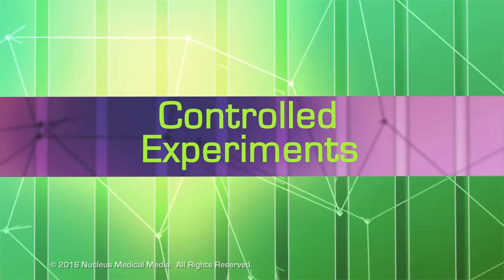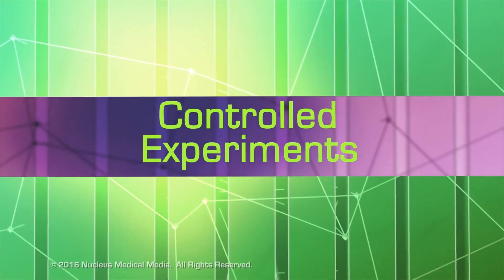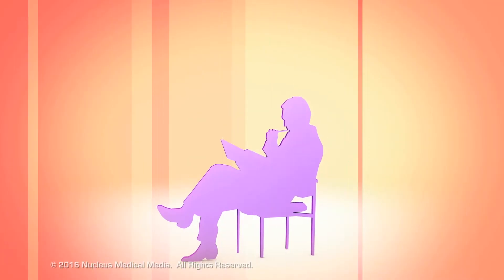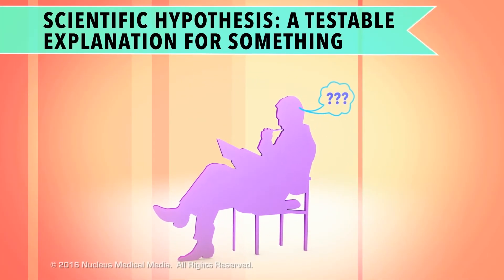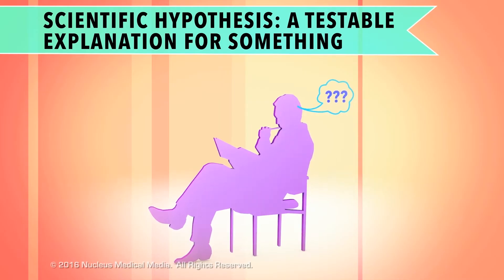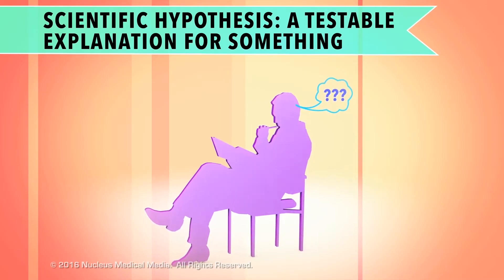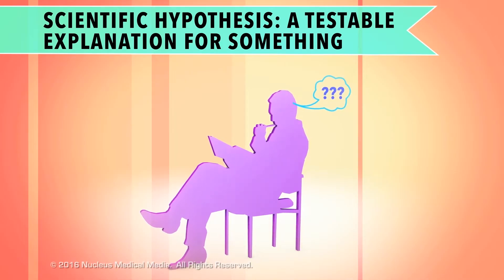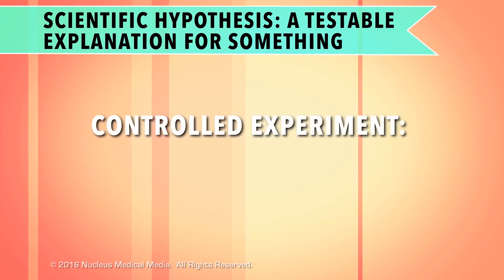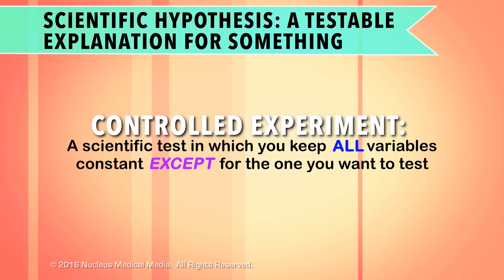What is a controlled experiment and why would you want to do one? Maybe you have an idea that you think might explain a situation — this is called a scientific hypothesis. How could you find out if your hypothesis is correct? You'd set up a controlled experiment in which you control, or keep constant, all the factors — known as variables — except for the one you want to test.